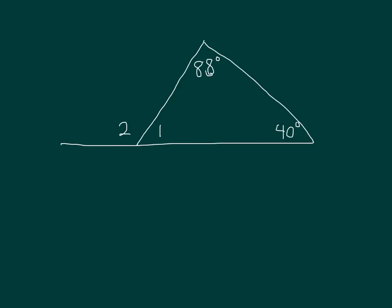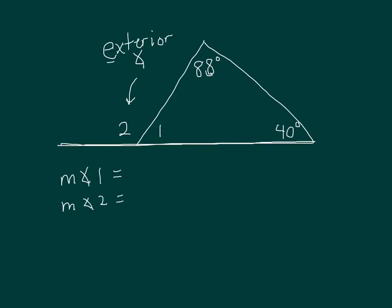Let's try another one. In this example, I've drawn an exterior angle of a triangle. An exterior angle is an angle formed by a side and an extension of an adjacent side — I've extended the bottom of the triangle, creating an angle outside of it, called an exterior angle. We want to find the measure of angle 1 and the measure of angle 2, and understand the relationship between them. Give it a try before we work it together.